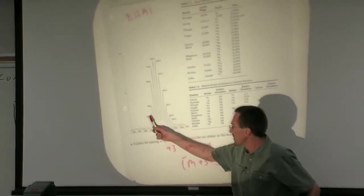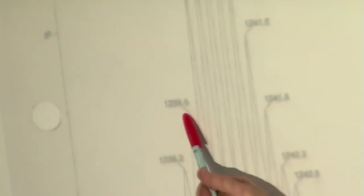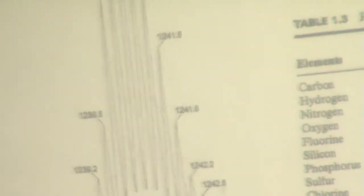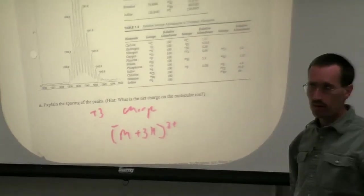What other elements are going to be contributing? You could have one C13. You can only have one unusual isotope for this one. What other important contributors are there going to be to this peak at 1239.5? Nitrogen and sulfur. Which will be a bigger contributor, nitrogen or sulfur?